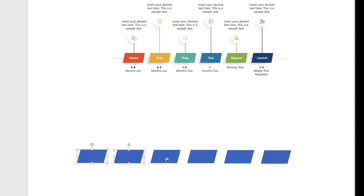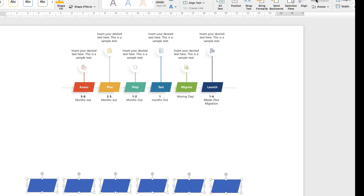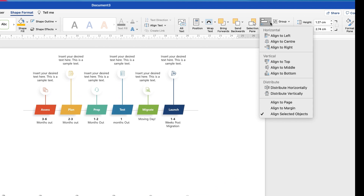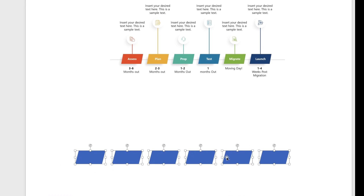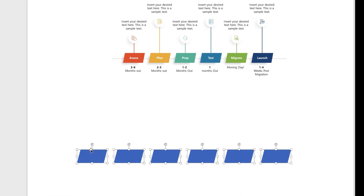Whilst they're selected, you can also make sure they're aligned to the top. Go to Align, Align to Top, and that will make sure they're all lined up along the top. Now we're just going to go ahead and put in the lines here, and then we'll change all the colours afterwards.